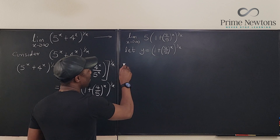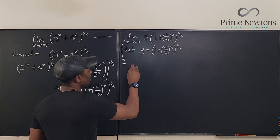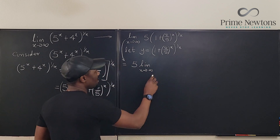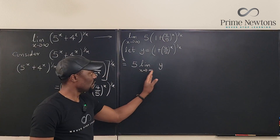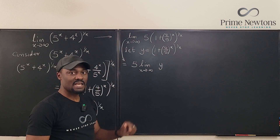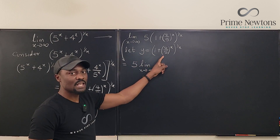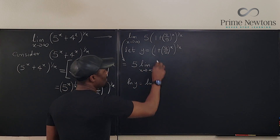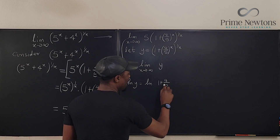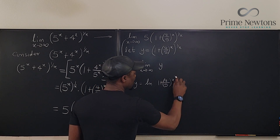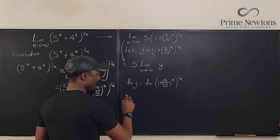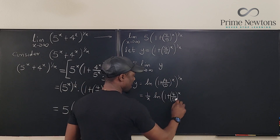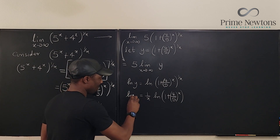So I'm going to write: this equals 5 times the limit as x goes to infinity of y. Now, what exactly is y? Remember we said y equals (1 + (4/5)^x)^(1/x). I'm going to take the natural log of both sides: ln(y) = (1/x) · ln(1 + (4/5)^x).